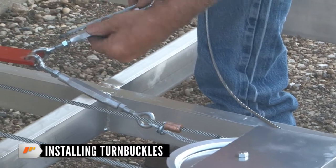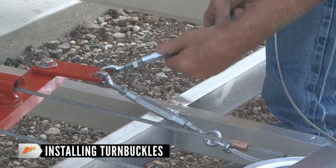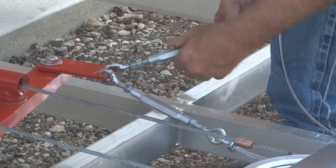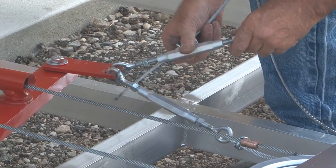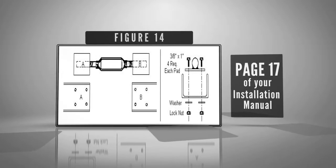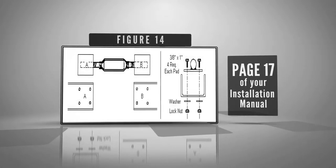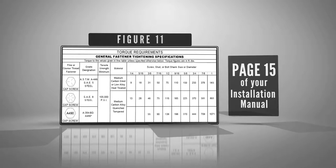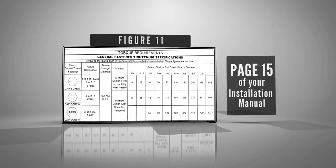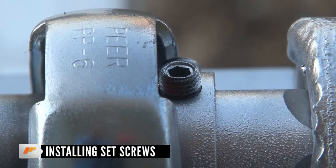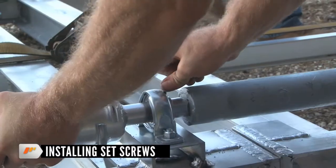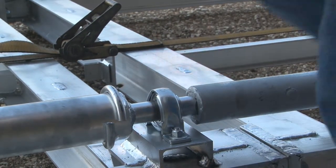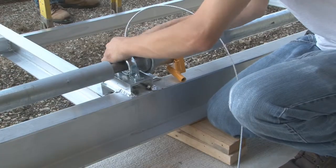Installing turnbuckles. If door is not equipped with wind load trusses, proceed to the next step. Lay turnbuckles out and note letters on plates. Locate trusses on the door and note letters on ends at center splice. See Figure 14. Install turnbuckles on corresponding trusses matching letters and tighten bolts using torque chart in Figure 11. Installing set screws: The turnbuckle adjustment will be made after the door is running but before it's sheeted.